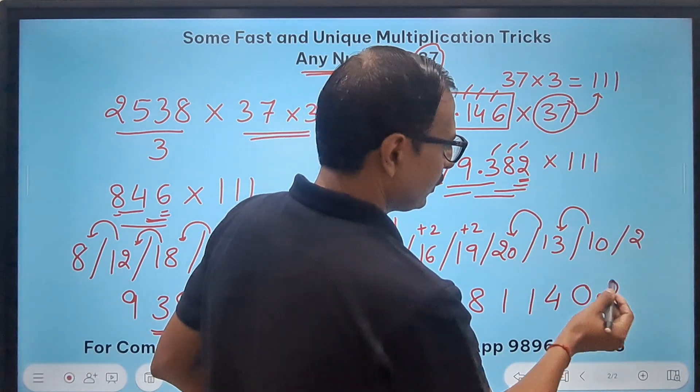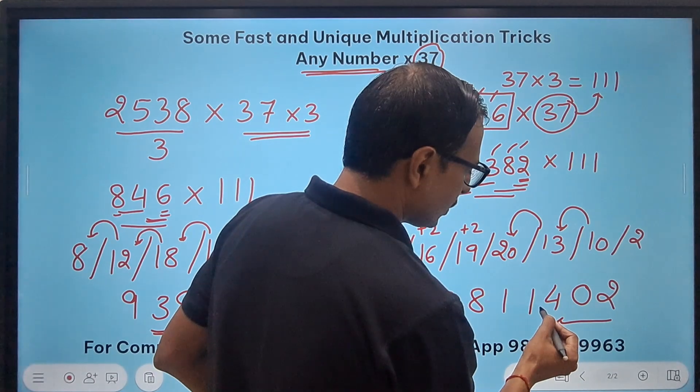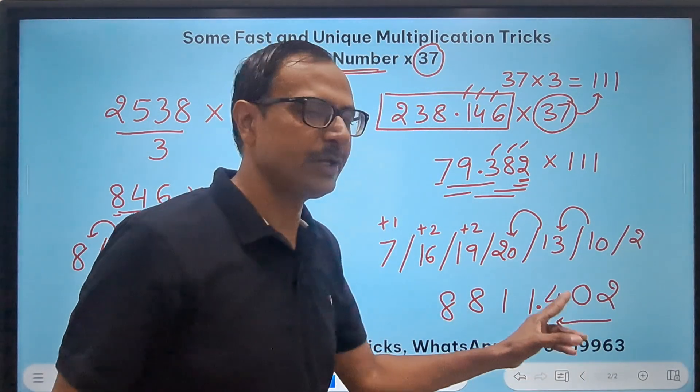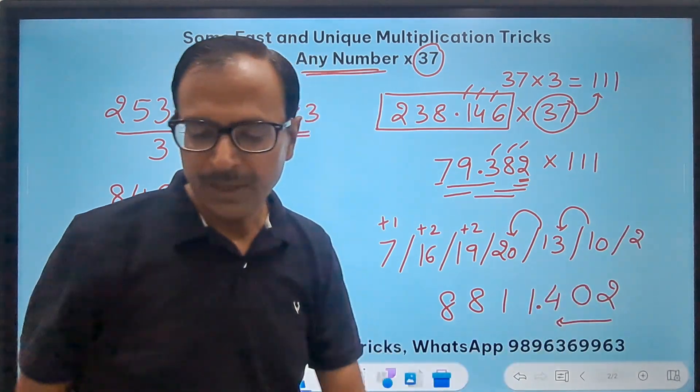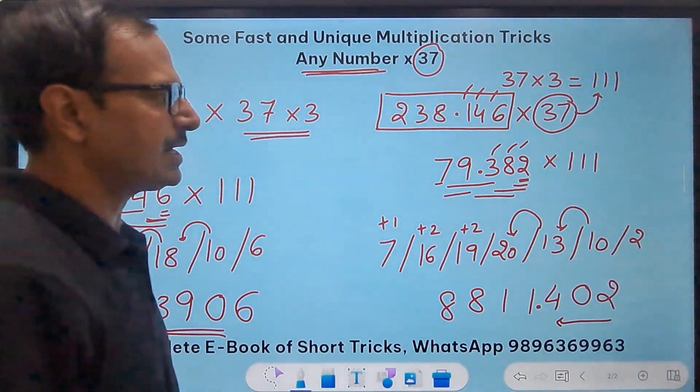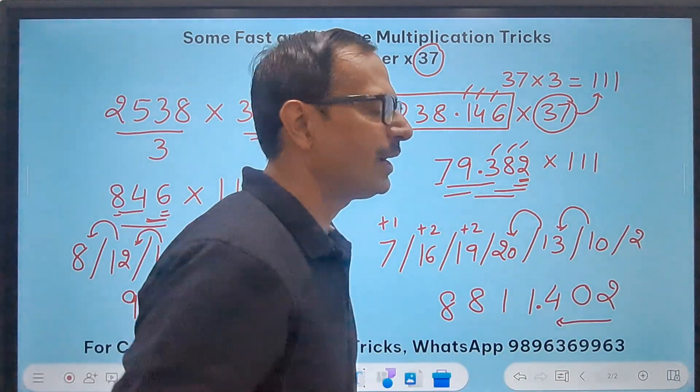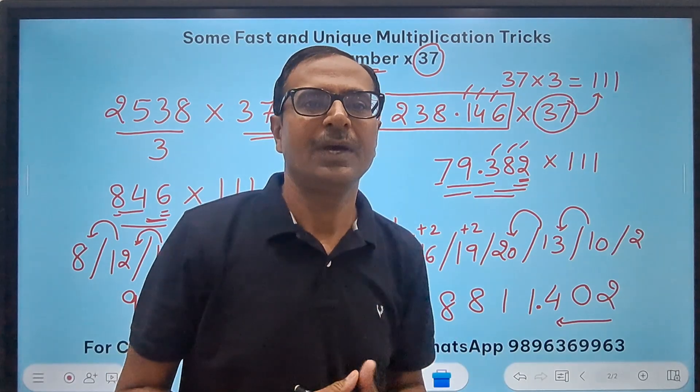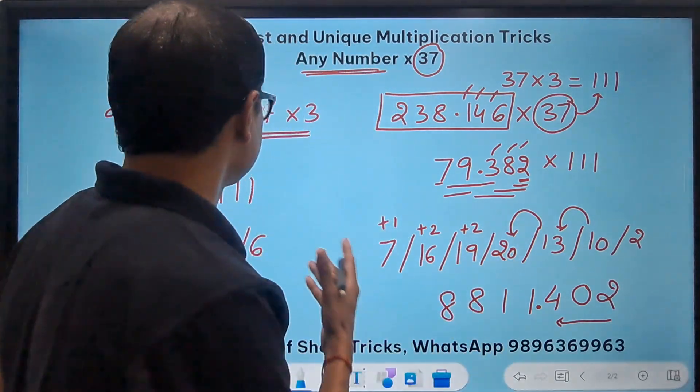Now put the decimal at the correct spot, we have three decimal places here or here so 1, 2, 3 so our answer is 8811.402. Now you can pick up the calculators and check whether this answer is correct or not and let me know in the comments whether the trick which I gave you just now you like that trick or not.